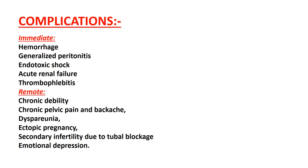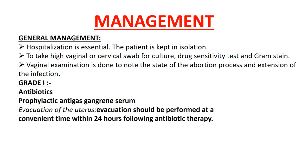Complications are immediate and remote. Immediate complications include hemorrhage, generalized peritonitis, endotoxic shock, acute renal failure, and thrombophlebitis. Remote complications include chronic debility, chronic pelvic pain and backache, dyspareunia (pain during intercourse), ectopic pregnancy, secondary infertility due to tubal blockage, and emotional depression. Hospitalization is essential. High vaginal or cervical swabs are taken for culture, drug sensitivity, and Gram stain. Vaginal examination is done to note the state of the abortion process and extent of infection. Prophylactic anti-gas gangrene serum and anti-tetanus serum are given if there is history of interference. Analgesics and sedatives are given for pain management.